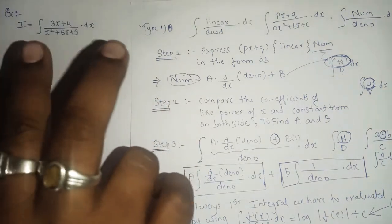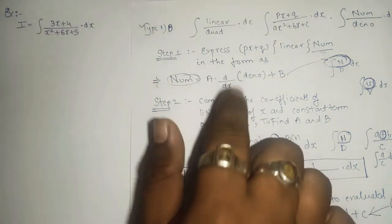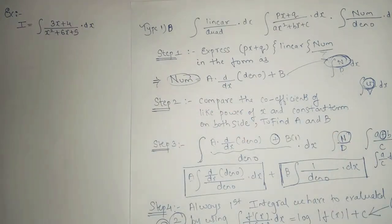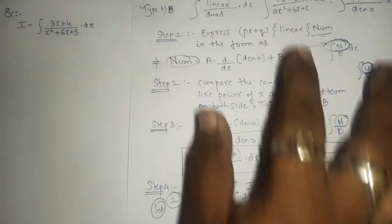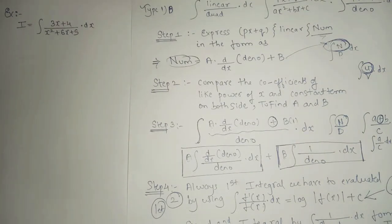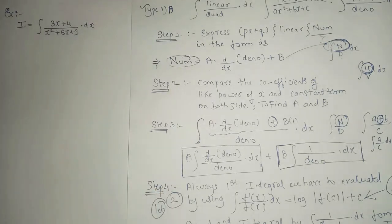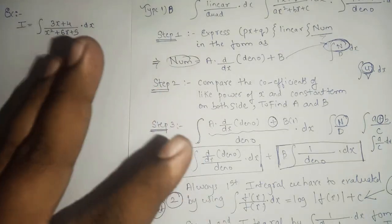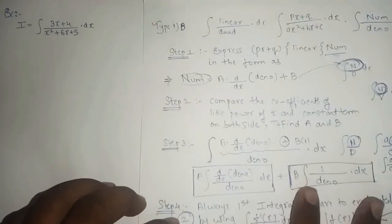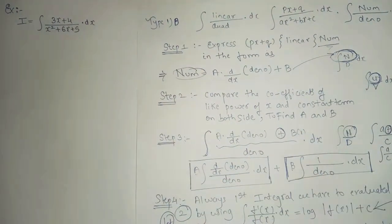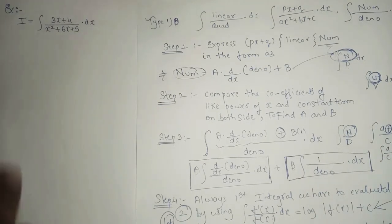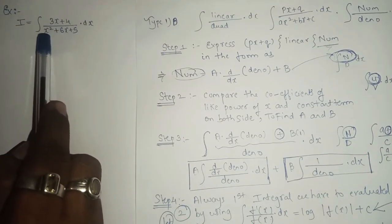There is one more alternate method to find the answer for type number 1b, but I suggest you stick with the proper method and proper steps. For this sum there are two different alternate methods, but follow the one you find easy to remember. So now we have integral of 3x plus 4 upon x squared plus 6x plus 5.